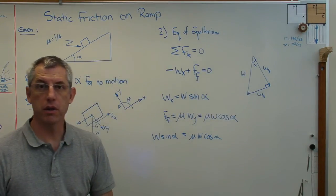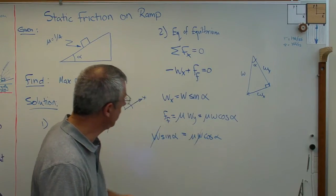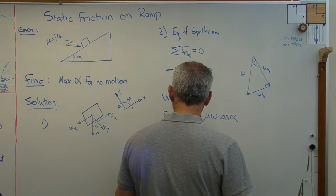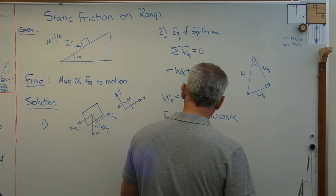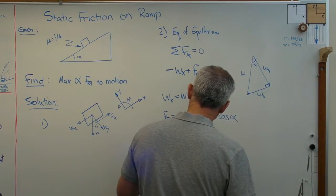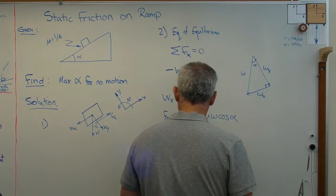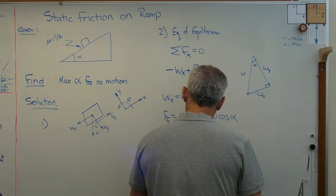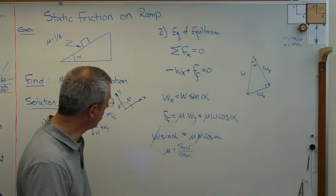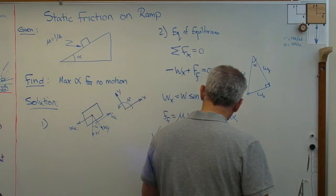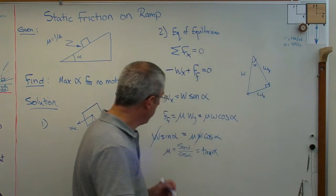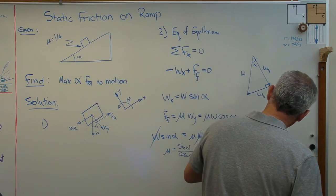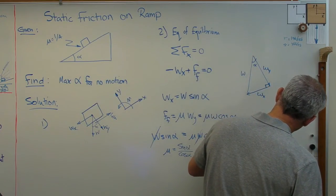And I'm going to make one more change here. I'm going to put W_X on one side of the equal sign and friction force on the other, so they'll equal one another. So I have W sine alpha is going to be equal to mu W cosine alpha. Well, the W appears on both sides of the equation here, so I can divide it out. It doesn't matter what W is. And if we solve this, we're going to find out that mu equals sine alpha over cosine alpha, and that equals tangent alpha.